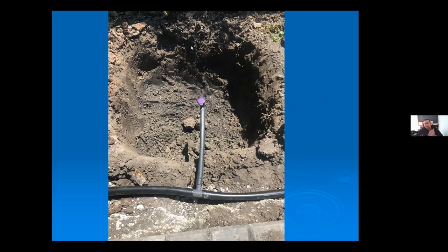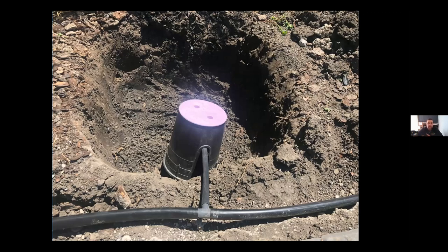A mulch basin is essentially a hole around the tree. This is what the hole looks like before you dig out the mulch basin and before the outlet cover and tree are planted. You can see the outlet line coming from the washing machine, and the purple ball valve — purple indicates gray water. The ball valve at the end of the line lets you adjust flow so one outlet doesn't get more water than another.